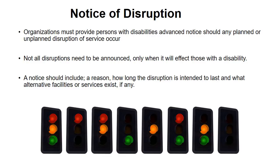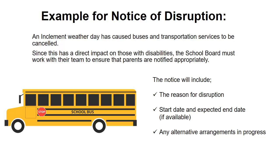Notice of Disruption: Organizations must provide persons with disabilities advance notice should any planned or unplanned disruption of service occur. Not all disruptions need to be announced — only when it will affect those with a disability. A notice should include a reason, how long the disruption is intended to last, and what alternative facilities or services exist, if any. For example, an inclement weather day that cancels buses must be communicated to parents, including the reason for the disruption, the start and expected end date if available, and any alternative arrangements in progress.